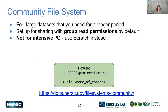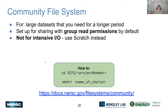The Community File System is your project directory — it's for data once you're done computing on Scratch and ready to move it off so you can do your next computation, or you don't want it deleted. Scratch gets purged regularly, whereas the Community File System doesn't. The space you get in CFS can be pretty big, so a lot of times people will move their data there when doing data analysis or keeping it handy while writing up a paper.